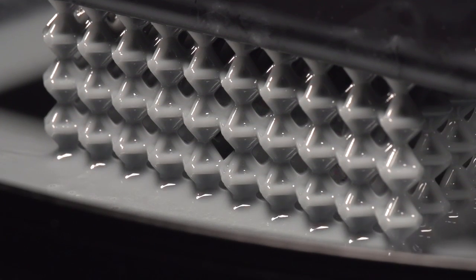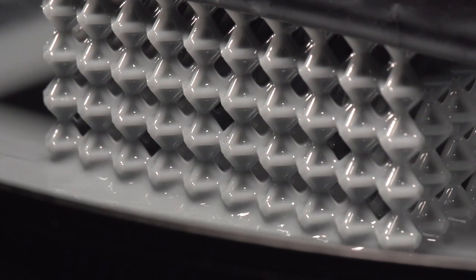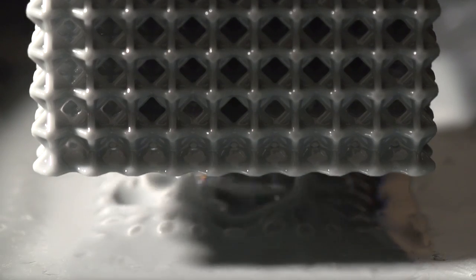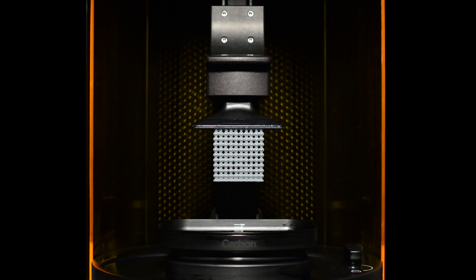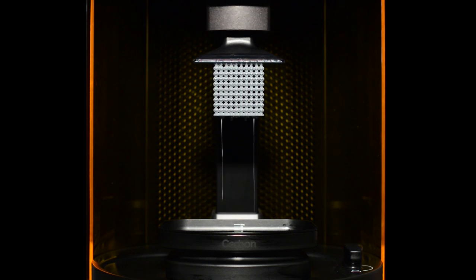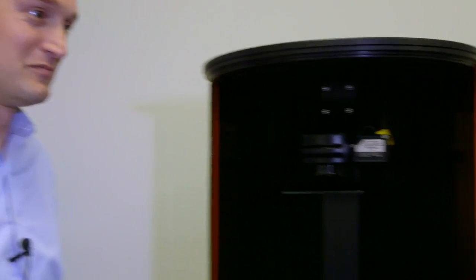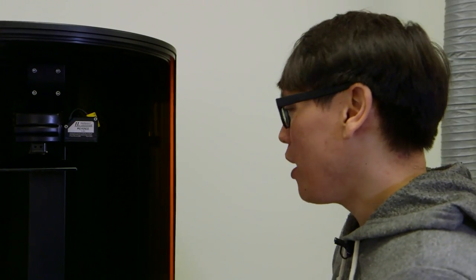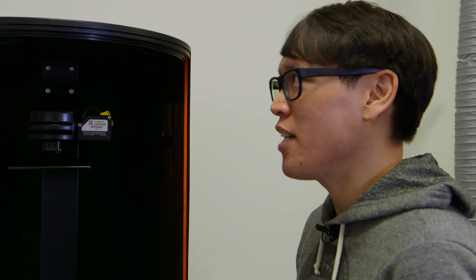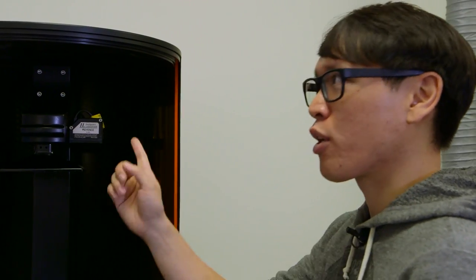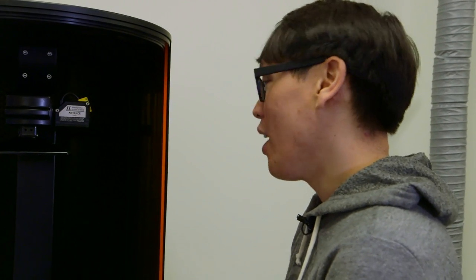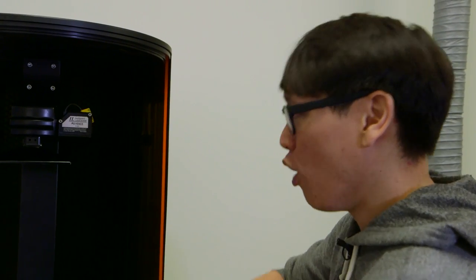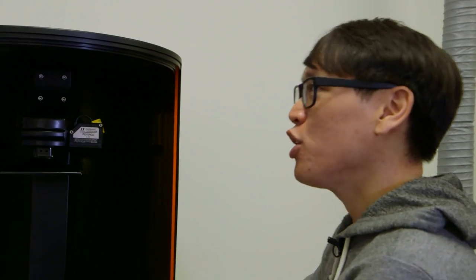Our technology CLIP, continuous liquid interface production, is a fundamental advance in 3D printing. What it allows is for us to print very fast, without layers, in engineering materials. All that together allows us to work with people who want to make real parts for production, as opposed to just for prototyping, which you can do also.